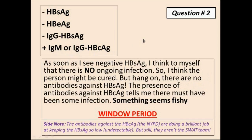Question number 2. Once again, the first thing I do is look at the hepatitis B surface antigen. As soon as I see a negative hepatitis B surface antigen, I think to myself that there is no ongoing infection. However, when I look at the antibodies against the surface antigen, they are also negative — that means this person cannot be cured. The presence of antibodies against the core antigen tells me there must have been some infection. This is the window period. The antibodies against the core antigen are doing a brilliant job at keeping the surface antigen levels so low that they are undetectable, but the person has not been cured yet because there are no antibodies against the surface antigen.